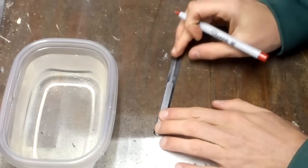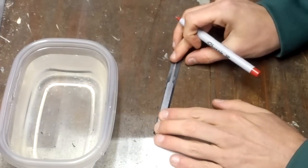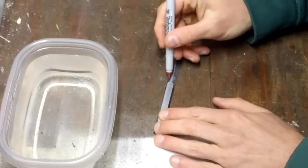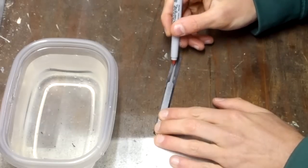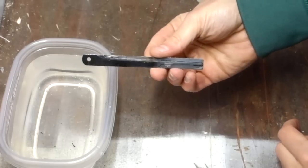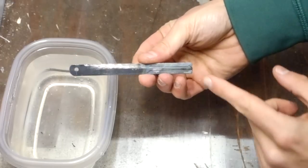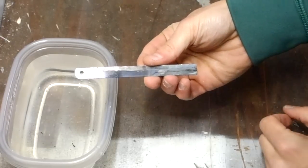Now I'll lay my template on top of the pick I'm trying to make. I can use a sharpie to make an outline. Now I know I can be pretty reckless just down to that line. After that I need to be more careful.